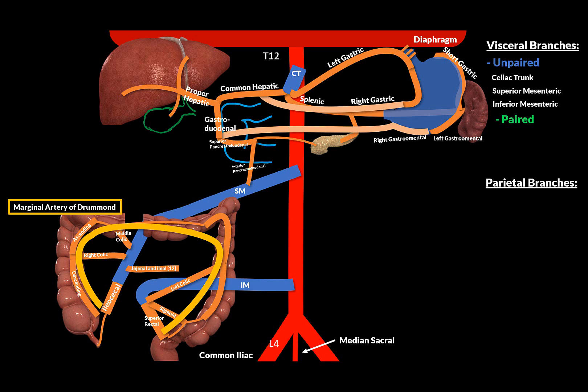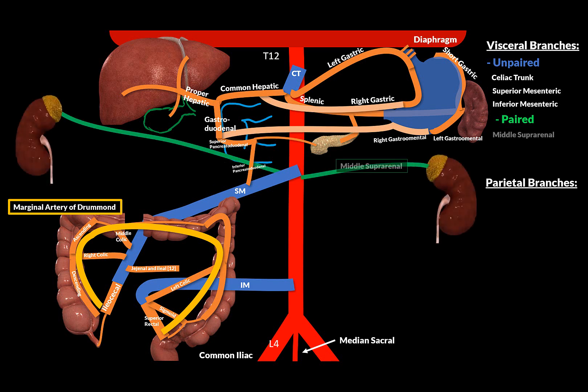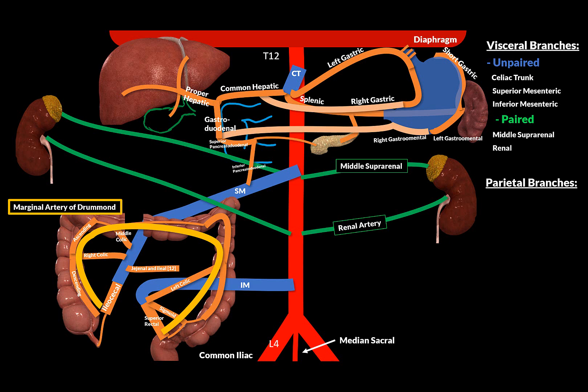Now let's look at the paired visceral arteries of the abdominal aorta. There are three paired visceral branches. The first are the middle suprarenal arteries, which emerge from the abdominal aorta at the level of the first lumbar vertebrae — approximately at the level of the superior mesenteric artery — and supply the suprarenal gland. The next paired visceral branch is the renal artery, which arises at the level of the second lumbar vertebrae, between the superior and inferior mesenteric artery. It goes straight to the kidneys, and on its way gives off the inferior suprarenal artery and a ureteral branch for the upper one-third of the ureter.